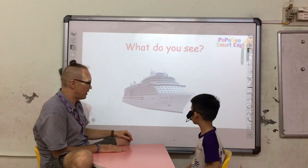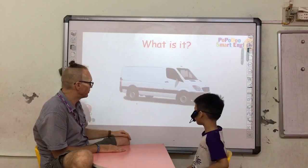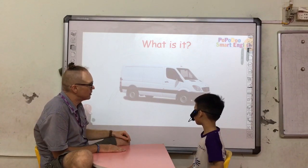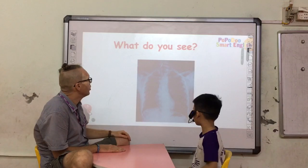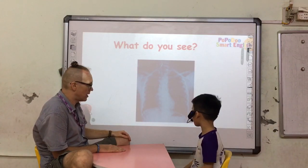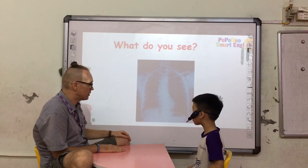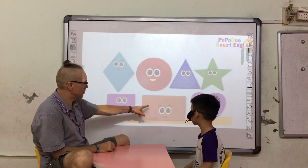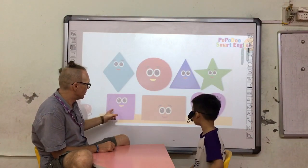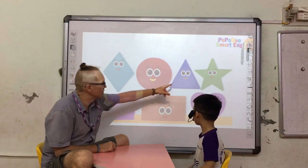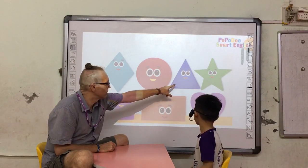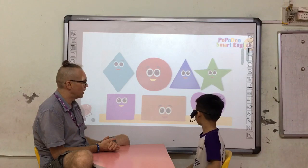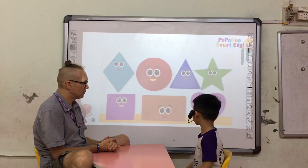What do you see? I see a sheet. What is this? What do you see? It's red. Here you see a shape. Square, triangle. What shape do you like? I like stars.